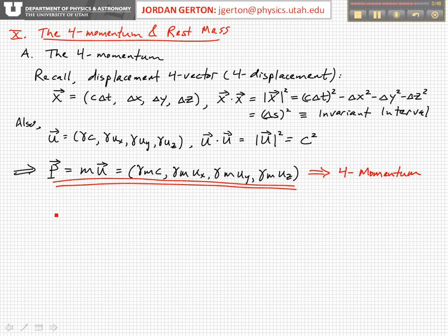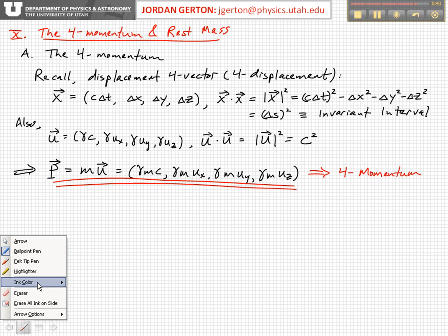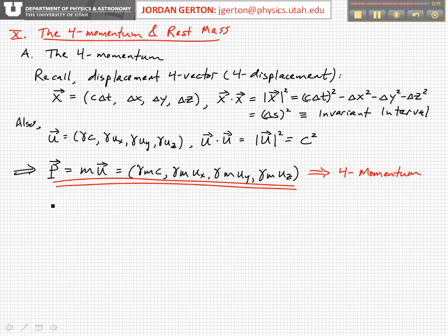Now the magnitude of the four momentum is obviously equal to mc, because m is a scalar, and the magnitude of the four velocity is just the speed of light c.